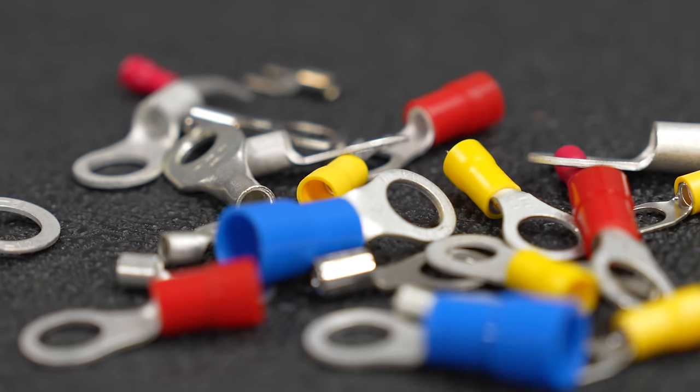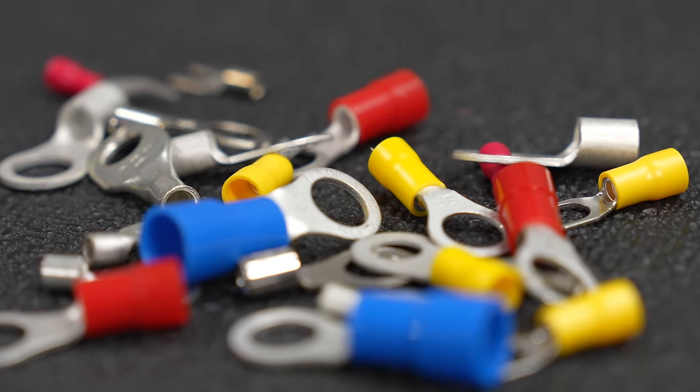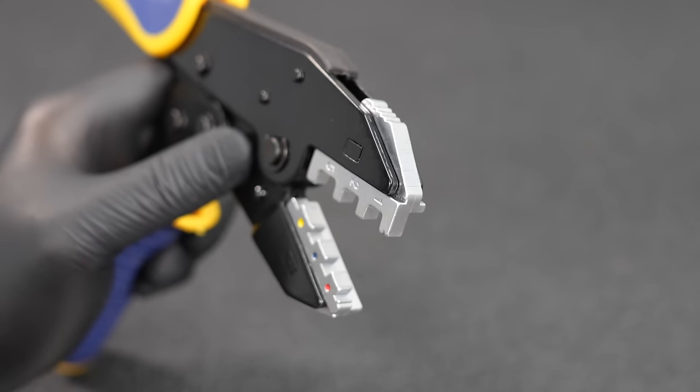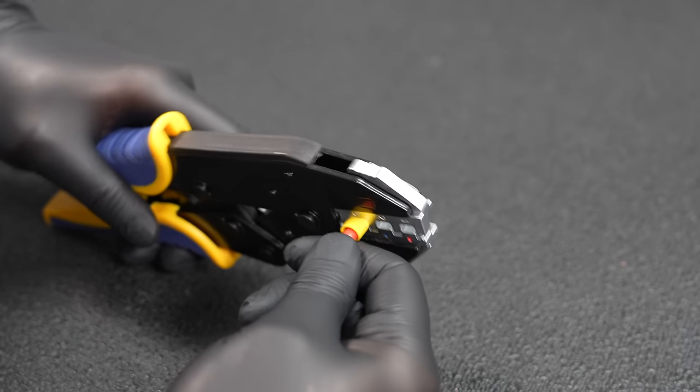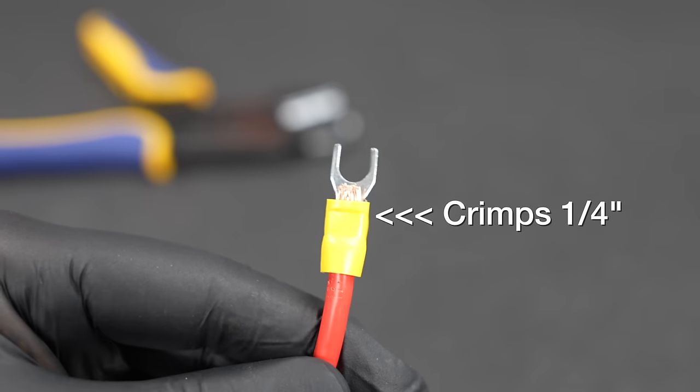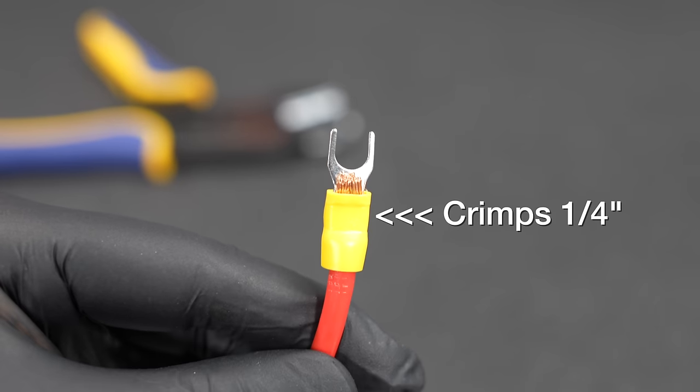When you're crimping these insulated connectors, surface area is key. The more surface area you get on your crimp, the better the connection. Compared to the cheap connector, this thing can't even do an eighth of an inch. And on insulated connectors, these ratcheting tools definitely do a better job.